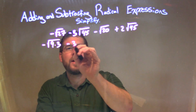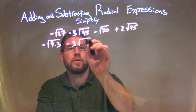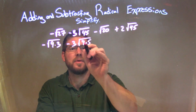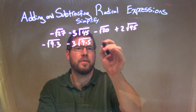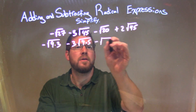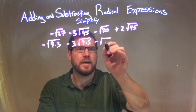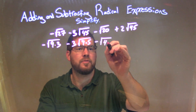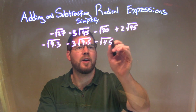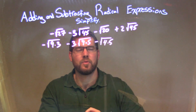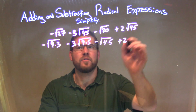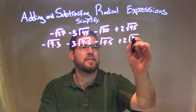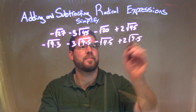Now we have minus 3 square root of 45, which is 9 times 5, and I choose that because I know I can take the square root of 9. The square root of 20 is just 4 times 5, and I choose 4 times 5 because I know I can take the square root of 4. And we've already done the square root of 45, just being 9 times 5.